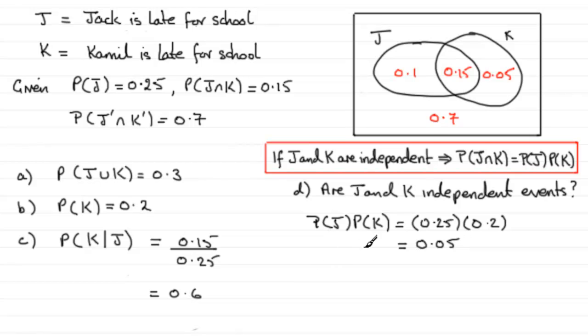So when we compare this to the probability of J intersected with K, which we know is 0.15, we can see that they're not equal.